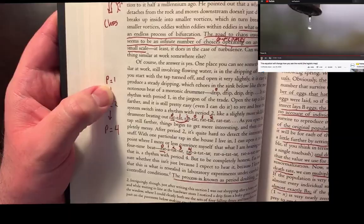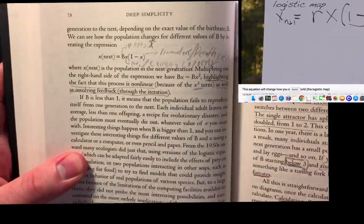John Gribben talks about how taps have period doublings and bifurcations in the exact same manner that Veritasium does. Both John Gribben and Veritasium talk about the May equation, which I'm going to list on the next page.